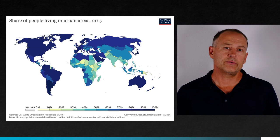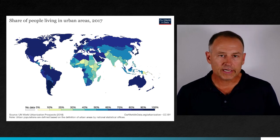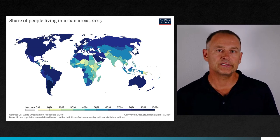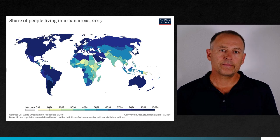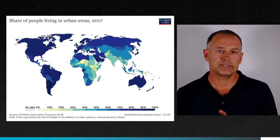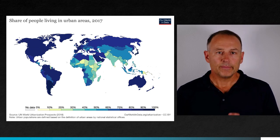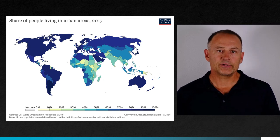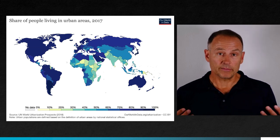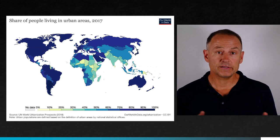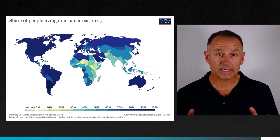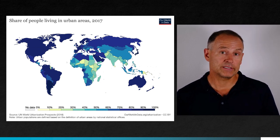If we look around the world today, we see massive differences across countries in the proportion of people that live in cities. As you can see in this map, the urban areas of the United States, Europe, and a number of other countries exceed 80% of the population living in urban settings. For the United States, that number is 82% in 2017. Most of Europe is about 80% to 85% urban. Australia is about 85% urban. Japan and Argentina are two of the highest, most urbanized countries, with 90% of their populations living in cities.